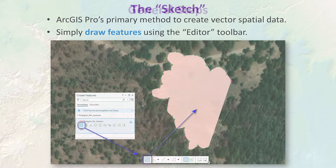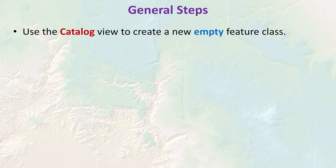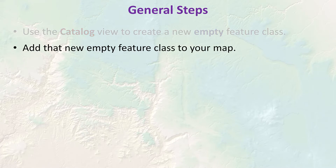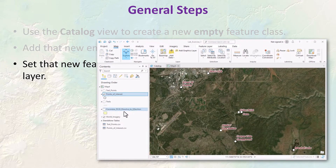Here's the typical editing workflow when you're creating vector data. We'll go through these steps together in the lab, but these are generally the steps you'll take. First, you create a new empty feature class in the catalog view. Then you add that new empty feature class to your map. You set your new feature layer to be the only editable and selectable layer — though this isn't a hard and fast rule, since sometimes you do want to edit multiple feature classes at once.